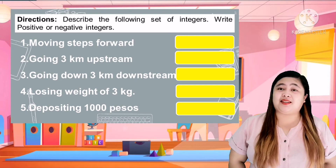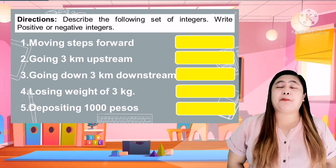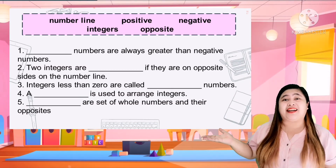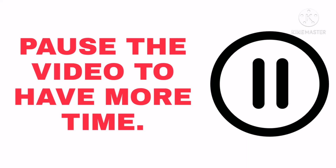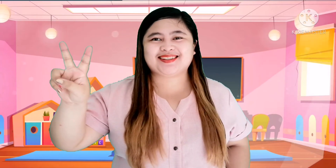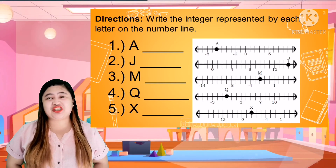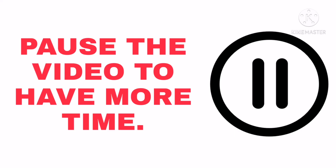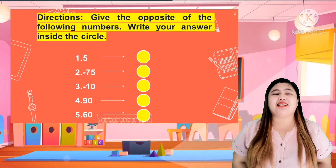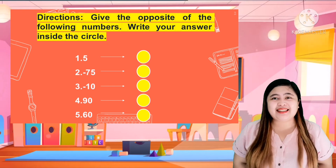Good job! Let's proceed to the next activity — I know you can do it! Describe the following set of integers — write positive or negative integers. We are almost done! To fully check if you really understand our lesson, provide the correct word on each blank. For our last two activities: Activity A — write the integer represented by each letter on the number line. Activity B — give the opposite of the following numbers and write your answer inside the circle.